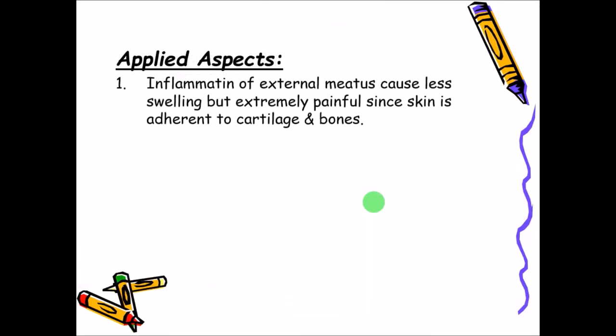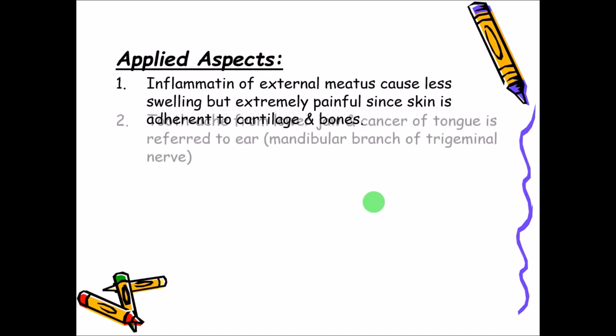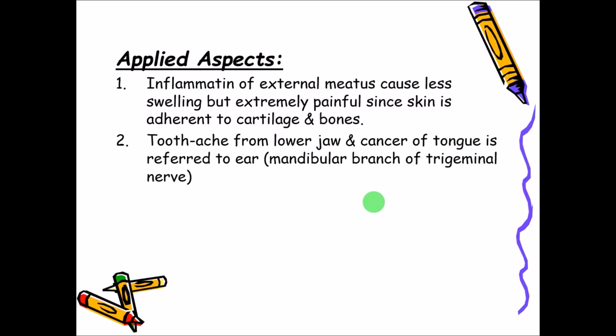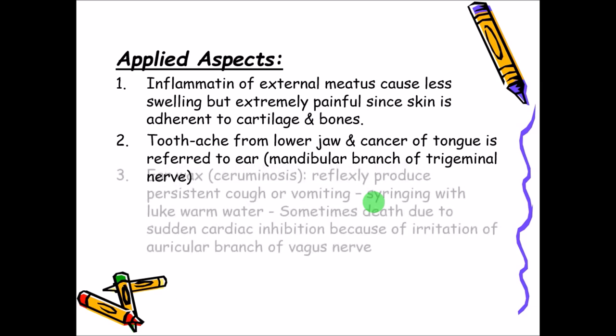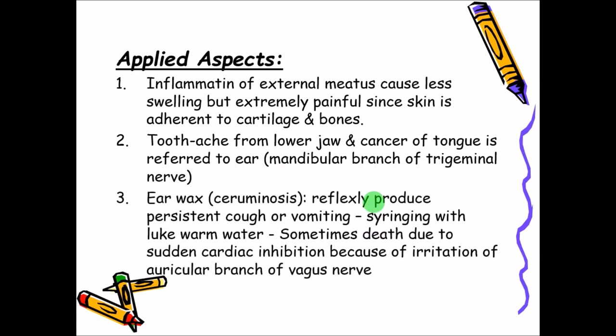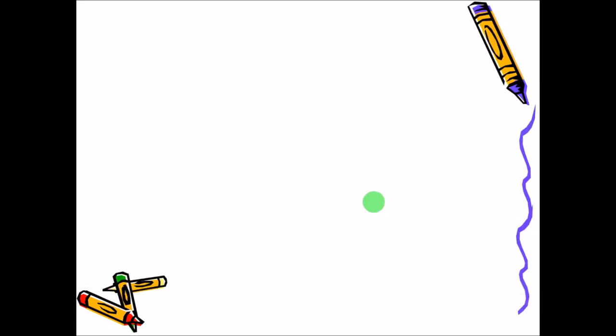Applied aspects: inflammation is painful because the skin is directly adherent to the cartilage or bone. Toothache from the lower jaw or cancer of the tongue can be referred to the external ear because the same nerve — the mandibular branch of the trigeminal nerve — supplies both. Earwax can be syringed out with lukewarm water, but sometimes irritation of the auricular branch of the vagus nerve can lead to cardiac inhibition and potentially death.